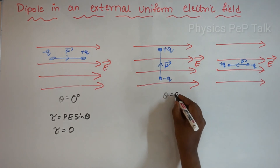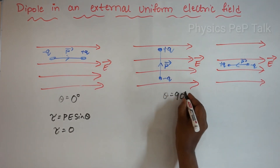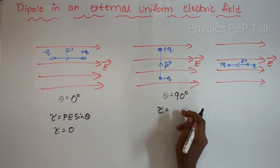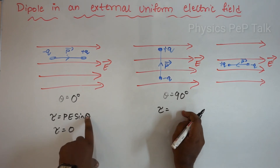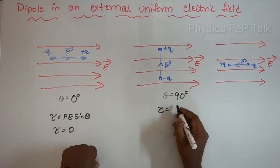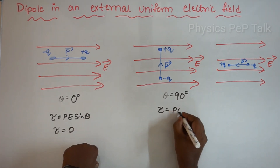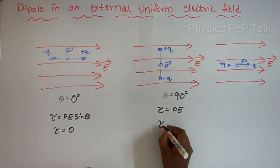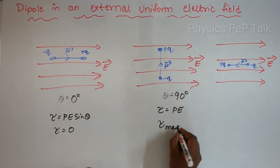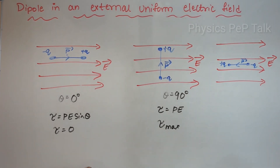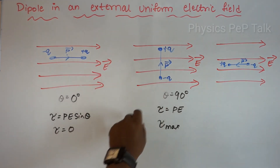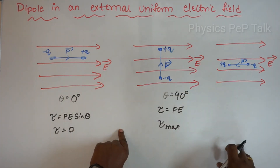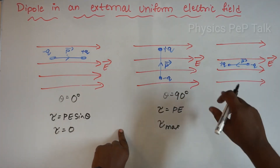Second case: when the dipole is perpendicular to the electric field, theta equals 90 degrees. So tau equals pE sin 90 equals pE times 1, so tau equals pE. Therefore, torque will be maximum when the dipole is perpendicular to the direction of the electric field.